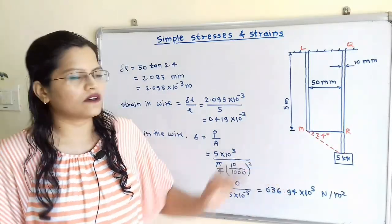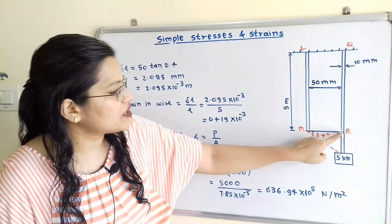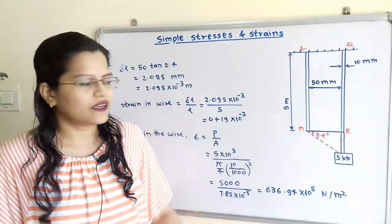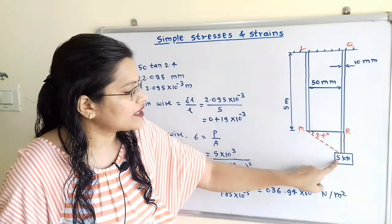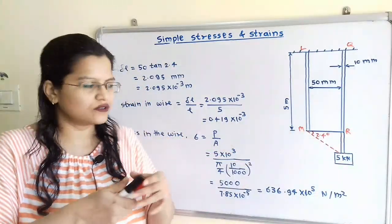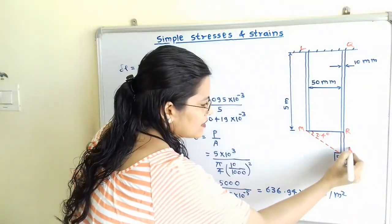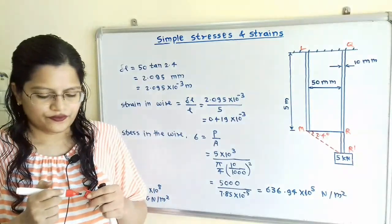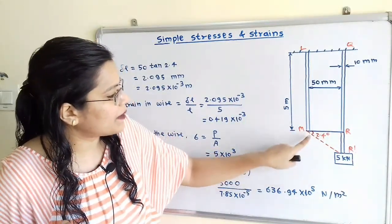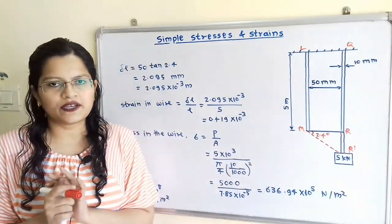Now if we observe this diagram, then here is the initial position of the horizontal bar that is MR. And when we attach the load equal to 5 kN, then this is the final position. So we will show here the final position of this point R is R'. And here the angle made by this horizontal bar is equal to 2.4 degrees.